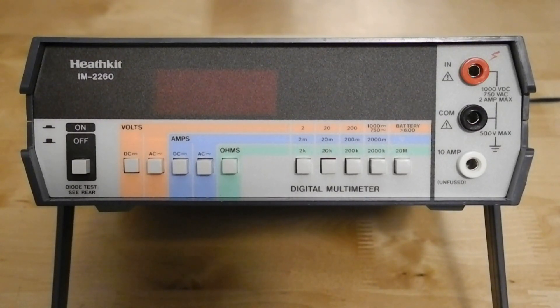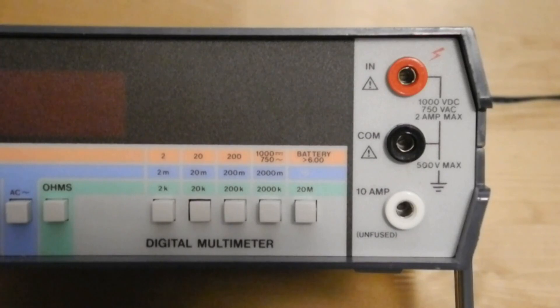Basic accuracy is plus or minus 0.5% for DC voltage and 1% for AC volts. It's input protected to 1000 volts DC and 750 volts AC. The current ranges are fused except for the 10 amp range. The resistance mode is protected to voltages up to plus or minus 350 volts.